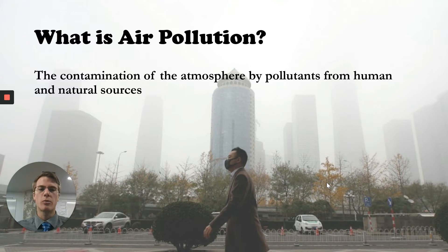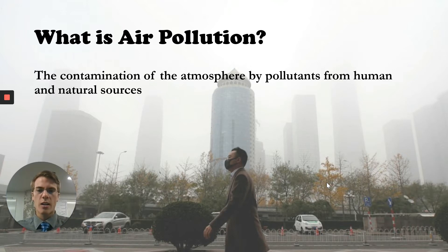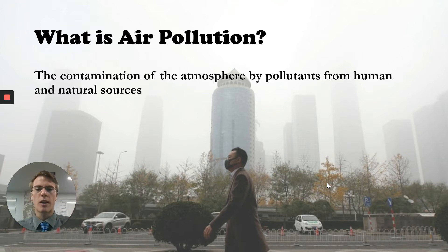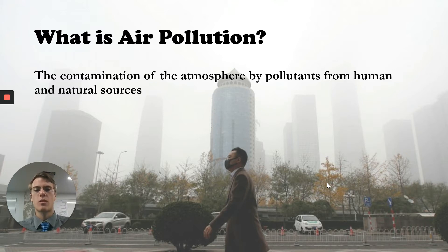This is a picture of a city in China, and as you can see the air is very polluted. We call this smog — that background layer that looks almost like mist. This is caused primarily by human sources in China; humans are causing the smog, and the air is contaminated.